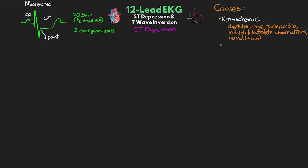We also have those secondary conditions such as bundle branch blocks, ventricular hypertrophy, Wolff-Parkinson-White, as well as post-cardioversion. The most concerning is ST depression that is the result of ischemia. If a patient presents with signs and symptoms of ischemia, even in the presence of non-ischemic causes, we need to assume ischemia and rule that out.